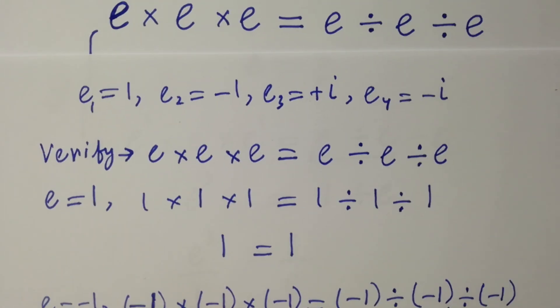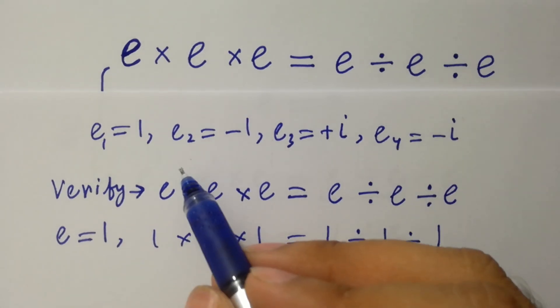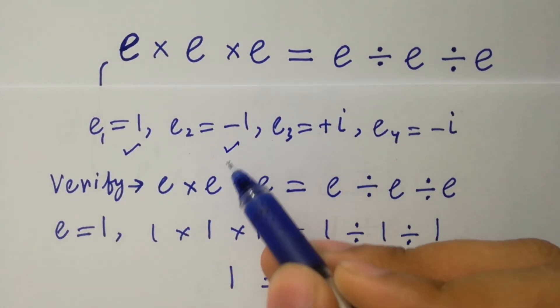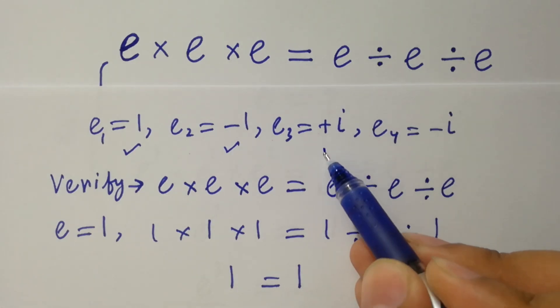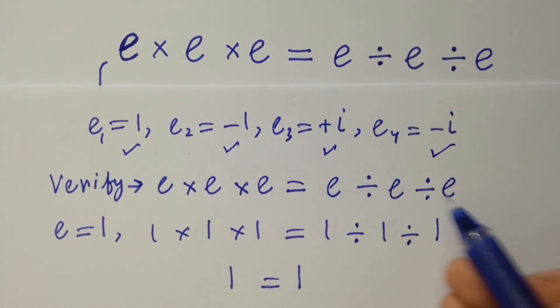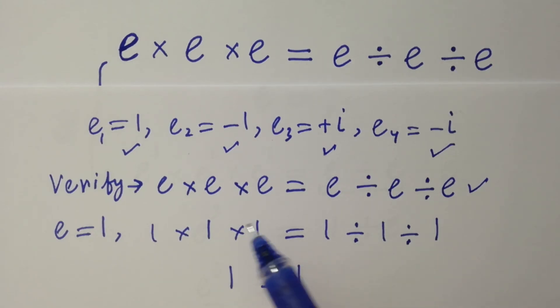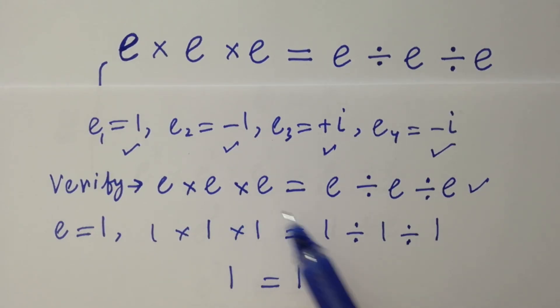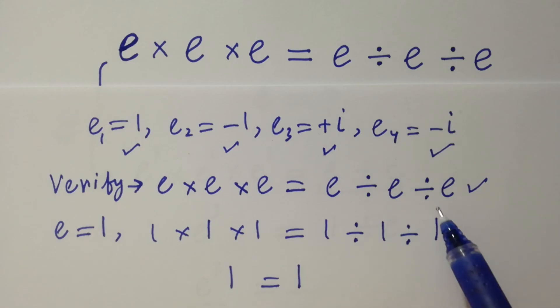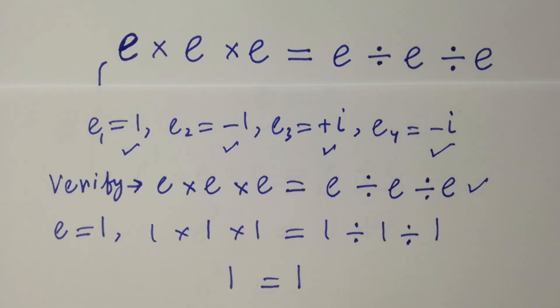This shows that the values e1 equals 1, e2 equals minus 1, e3 equals plus i, and e4 equals minus i all satisfy the equation e times e times e equals e divided by e divided by e. Thanks for watching this video. Please subscribe to this channel to get notifications of my new videos. Bye.